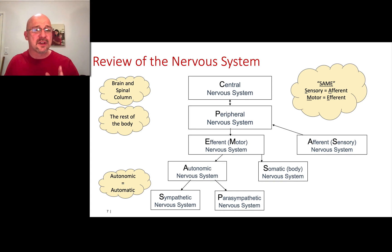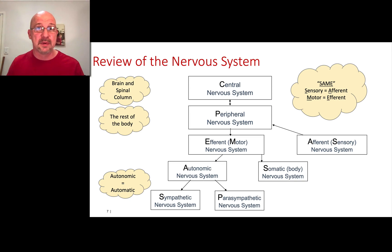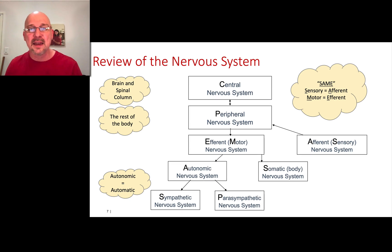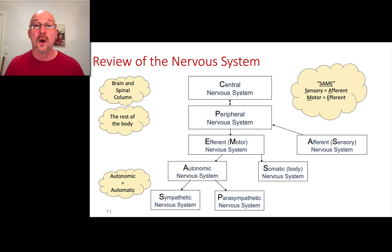If you're a bit fuzzy on the autonomic nervous system, I've got another lecture on YouTube — about half an hour — that reviews it in detail. As paramedics, we interact a lot with patients' autonomic nervous systems. Many of the drugs we use — adrenaline, atropine — work on the autonomic nervous system, so you should have a good understanding of it. It's not central to this lecture, but if you're unclear on what the autonomic nervous system is, make sure you fix that.